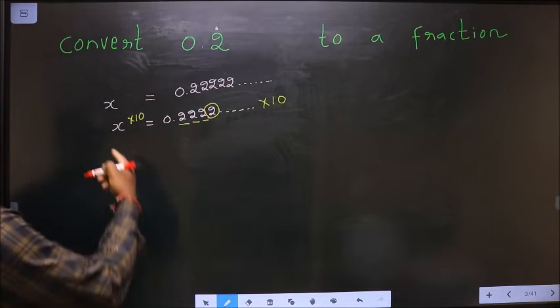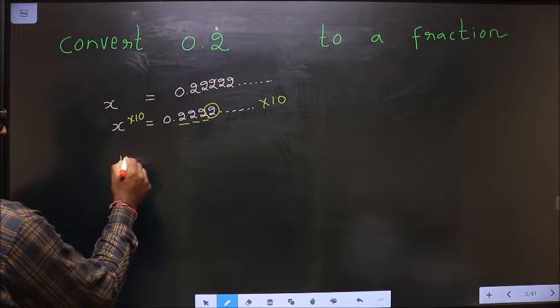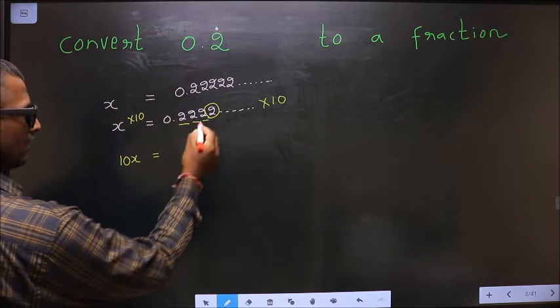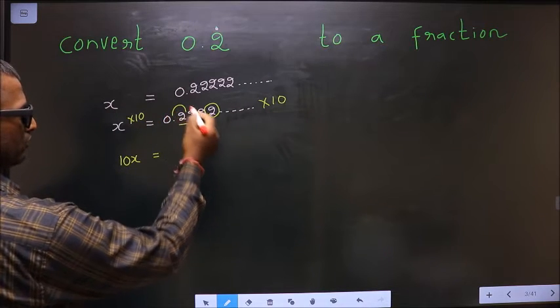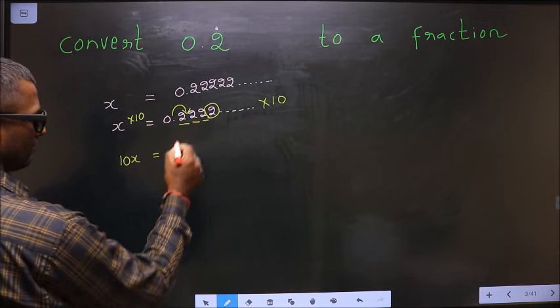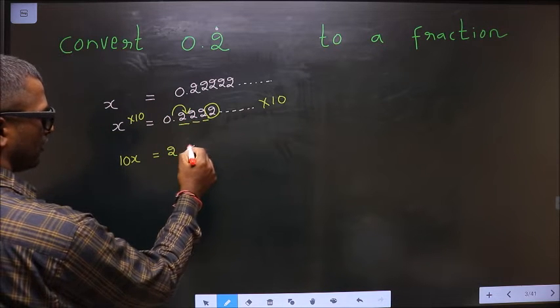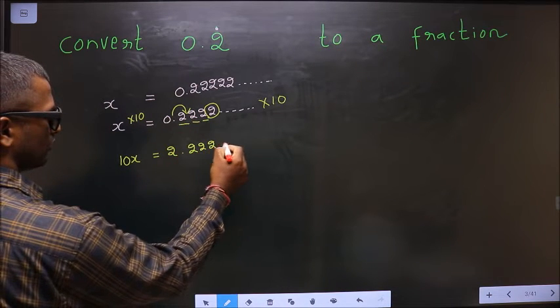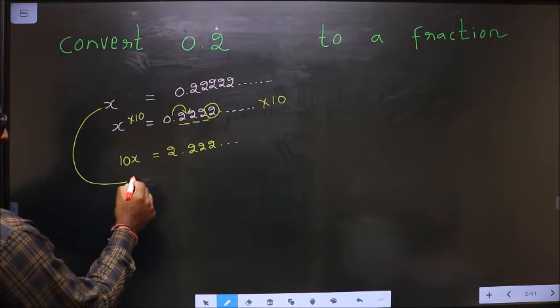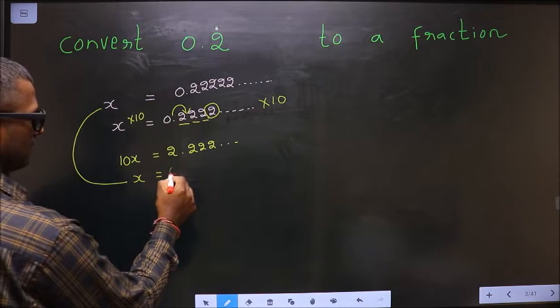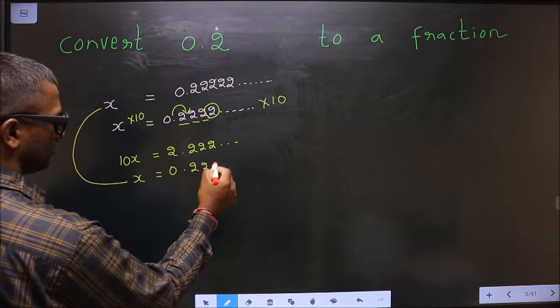Next, x into 10 is 10x. Here when you are multiplying with 10, the decimal will move to the right. 10x, making it 2.222, and so on. Now, I write this below this: x equal to 0.222.